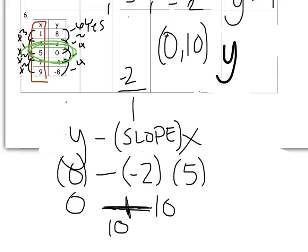So I should have Y equals something X. What goes in front of X? Negative 2. What goes after X? It's a positive 10. So the equation is Y equals negative 2X plus 10.